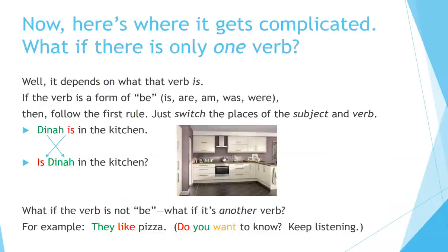Here is where it gets complicated. What if there is only one verb? Well, it depends on what the verb is. If the verb is a form of 'be' — is, are, am, was, or were — then follow the first rule: just switch the places of the subject and verb. For example, 'Dinah is in the kitchen' becomes 'Is Dinah in the kitchen?'